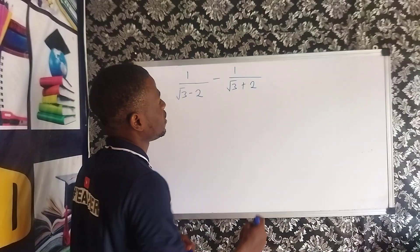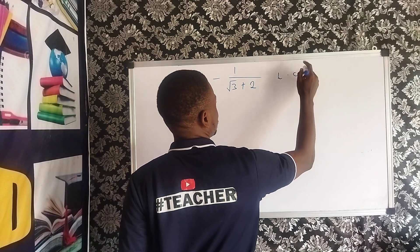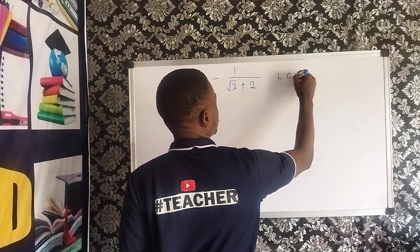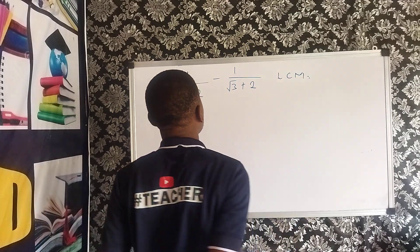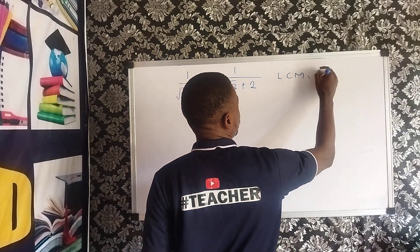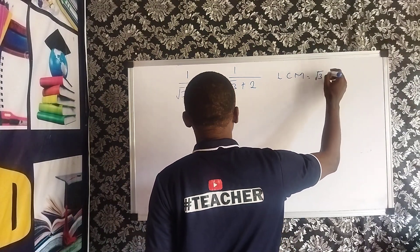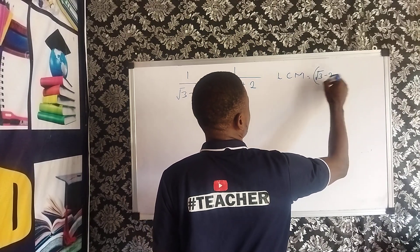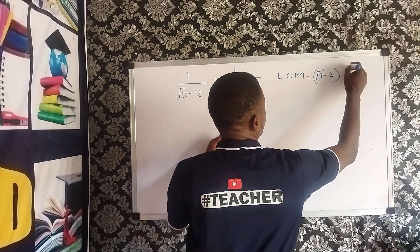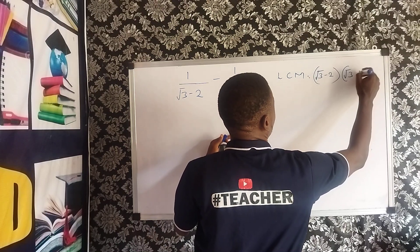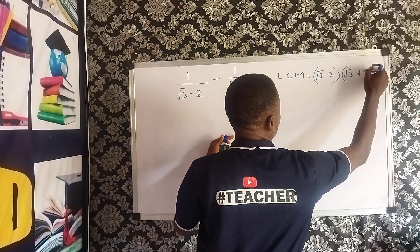So, in this case, we write our LCM here first. Our LCM of this fraction are (root 3 minus 2), close your bracket, then (root 3 plus 2).